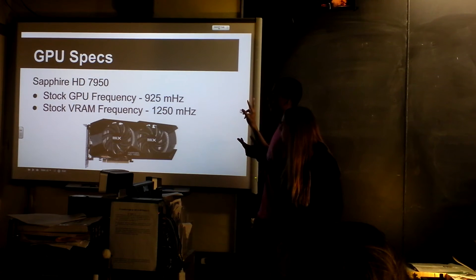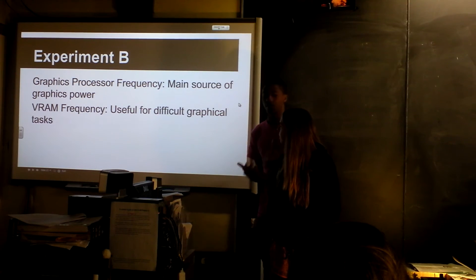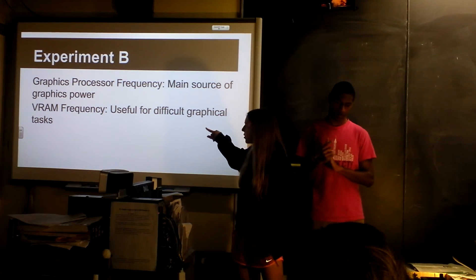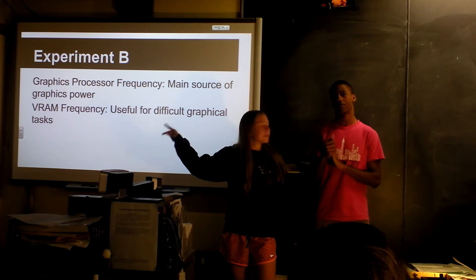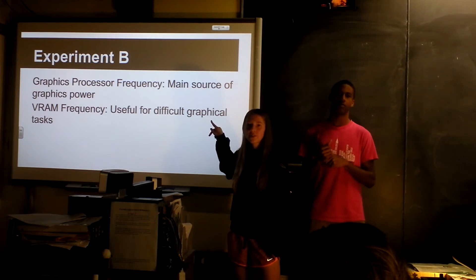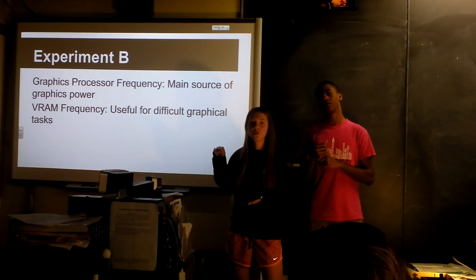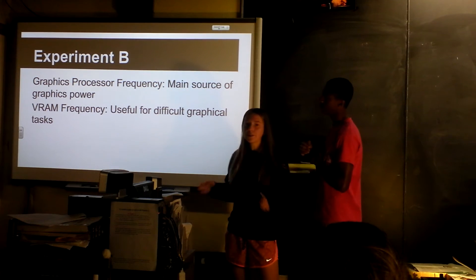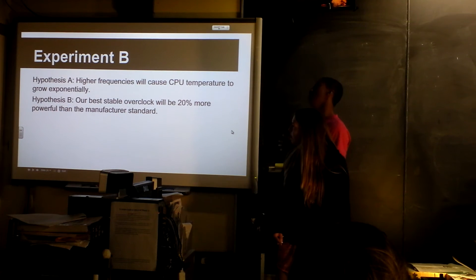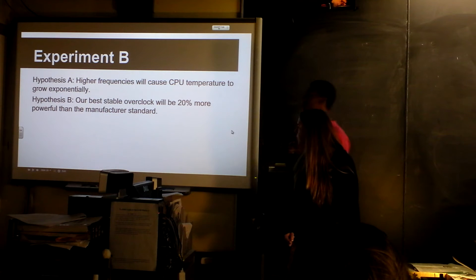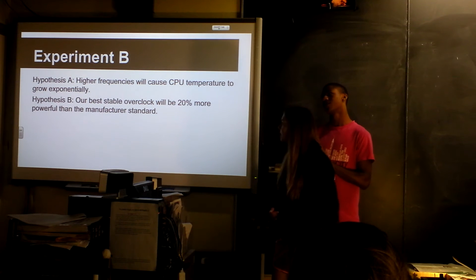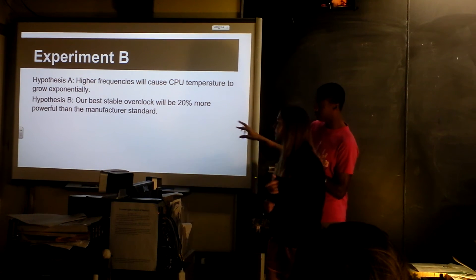And then we did the graphics card, and that's experiment. Okay, and so there are two kind of ways this happens. So there's a graphics processor frequency and the VRAM frequency. And so when it's just doing regular things, it uses the graphics processor frequency, and the VRAM is only brought in for something that's really stressful for the graphics card and difficult to do. And then our first hypothesis was higher frequencies will cause the temperature to go up. That should be a G, not a C. And then our second hypothesis was that we'll be able to overclock it to 20% more than the manufacturer standard.